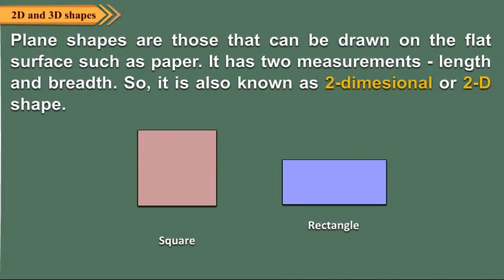Plain shapes are those that can be drawn on the flat surface such as paper. It has two measurements, length and breadth. So it is also known as two-dimensional or a 2D shape.